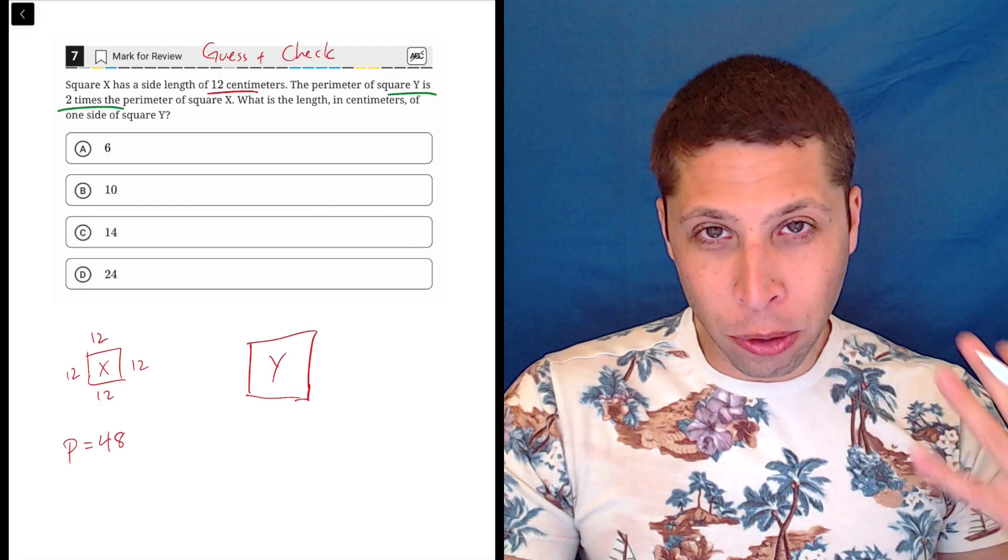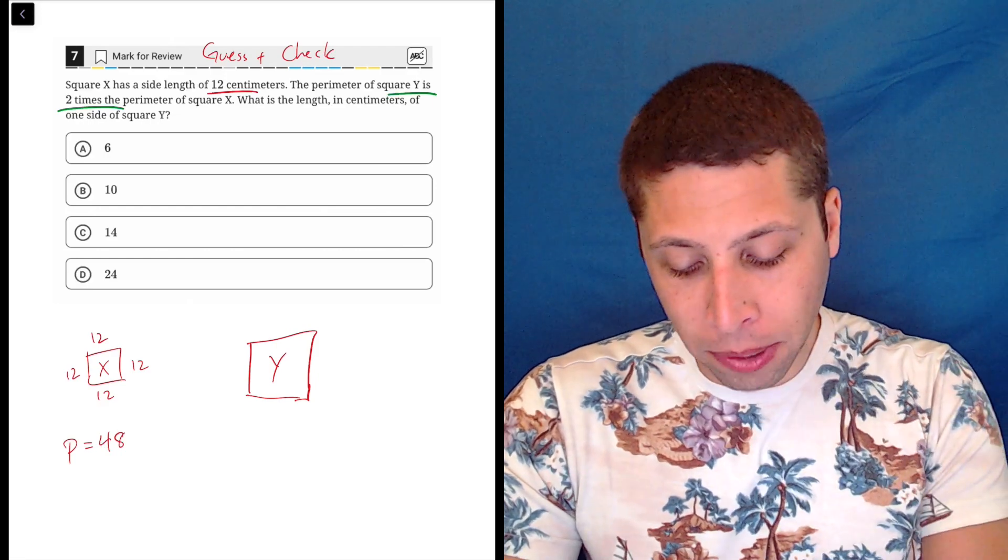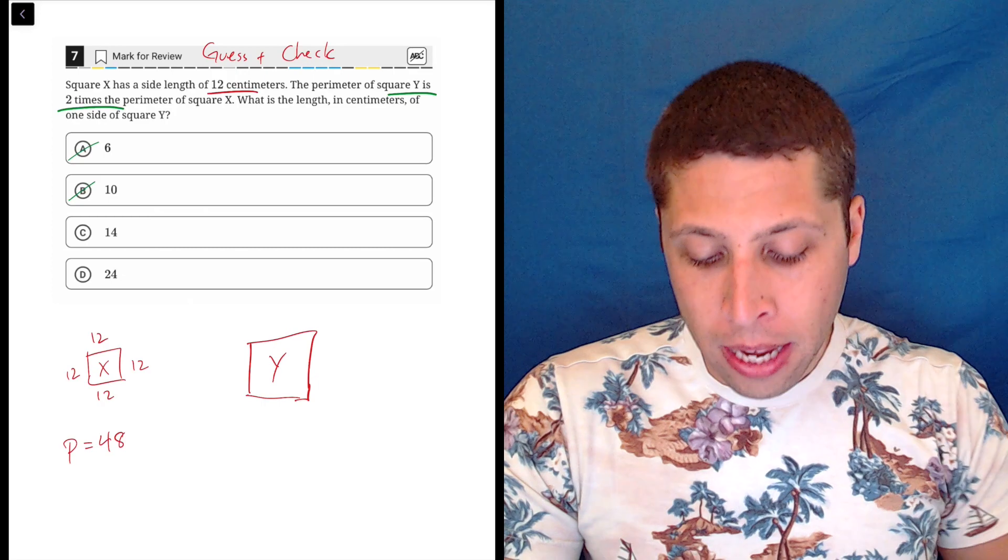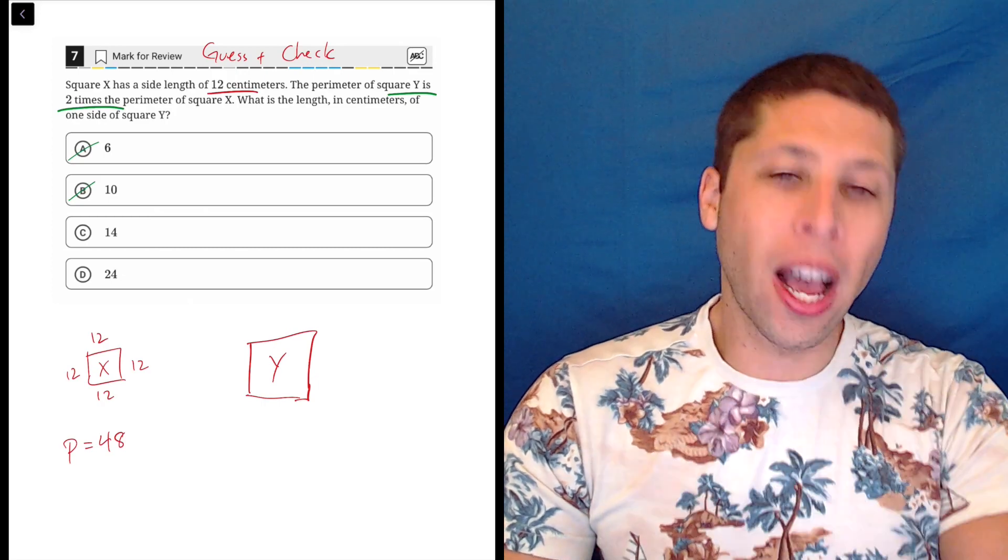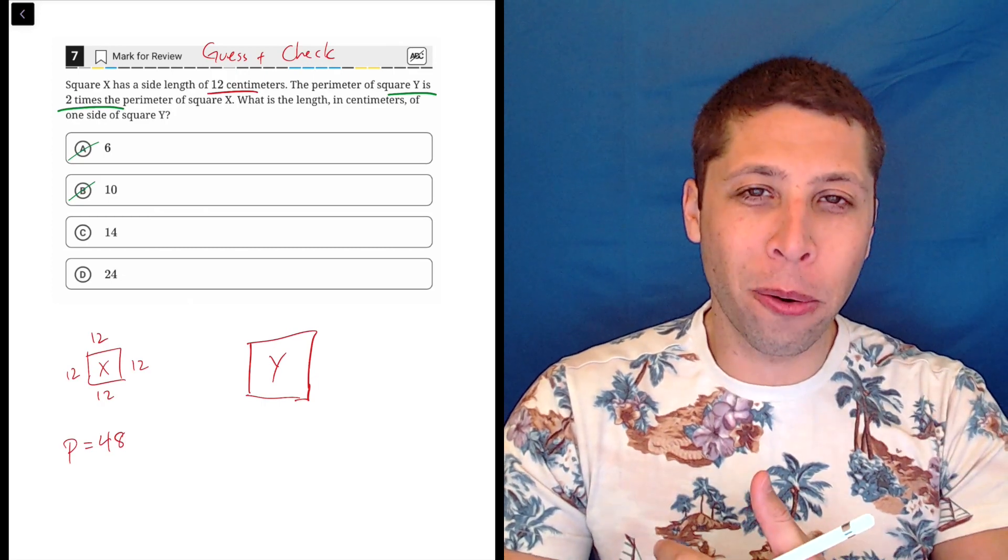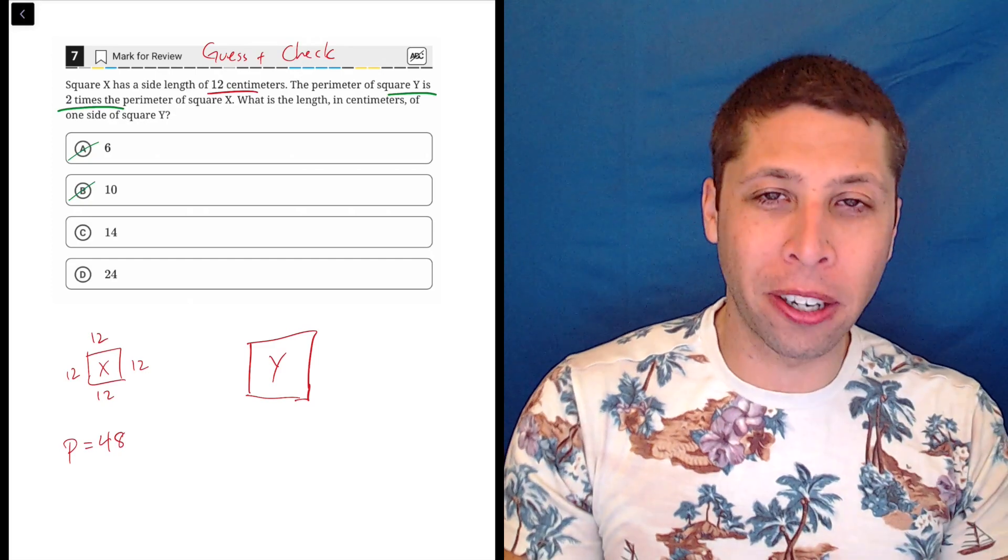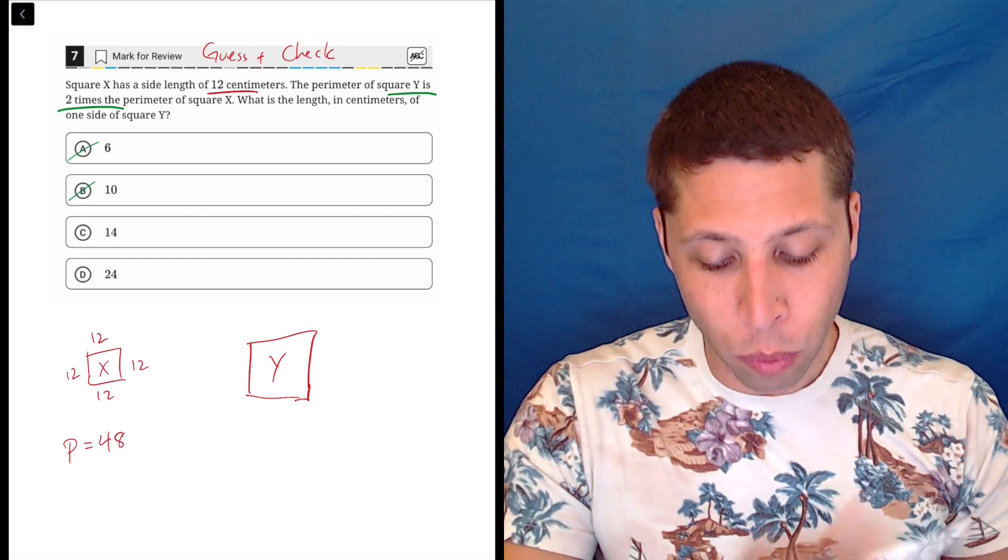So just kind of using the logic of the answer choices, it's probably not going to be a or b, because those are smaller side lengths, right? So how would we get a bigger perimeter if we had a smaller square? We should use a bigger one.